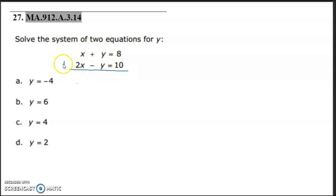So if we were to add these two together, we would have x plus 2x, which is 3x. These would completely cancel, and then 8 plus 10 is 18. So then we're going to go ahead and solve for x by dividing both sides by 3. So x is going to equal 18 divided by 3 is 6.